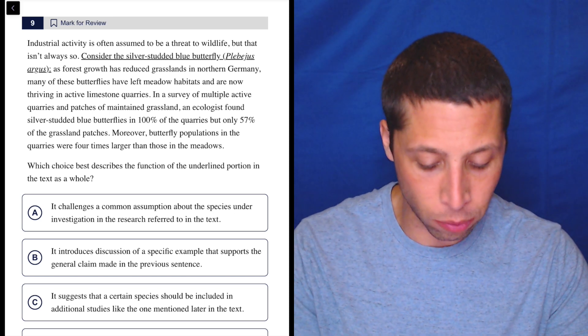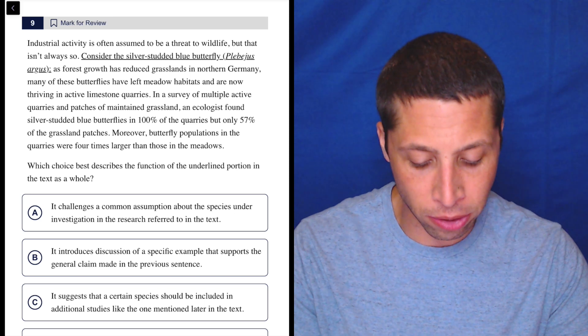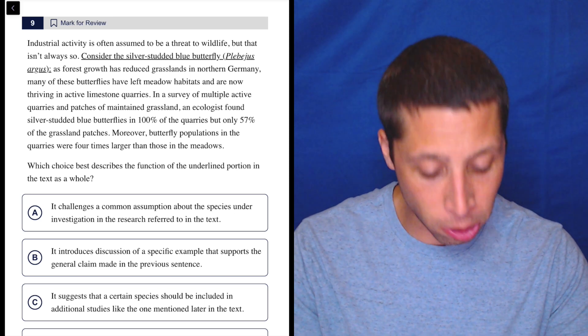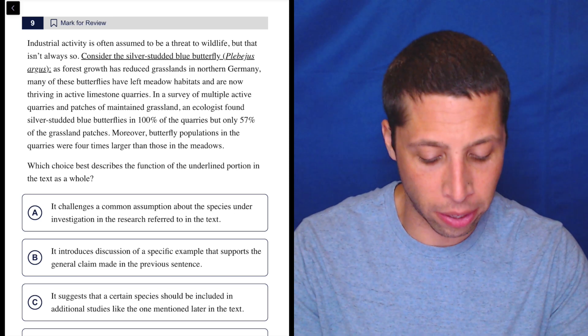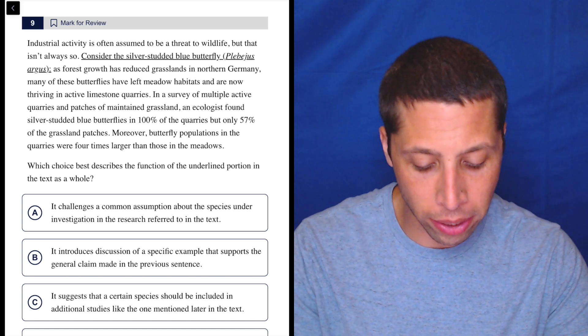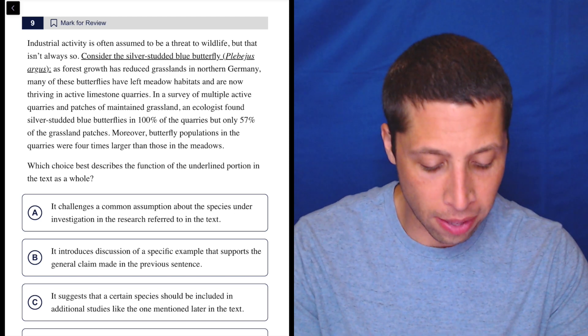In a survey of multiple active quarries and patches of mainland grassland, an ecologist found silver-studded blue butterflies in 100% of the quarries, but only 57% of the grassland patches. Moreover, butterfly populations in the quarries were four times larger than those in the meadows.